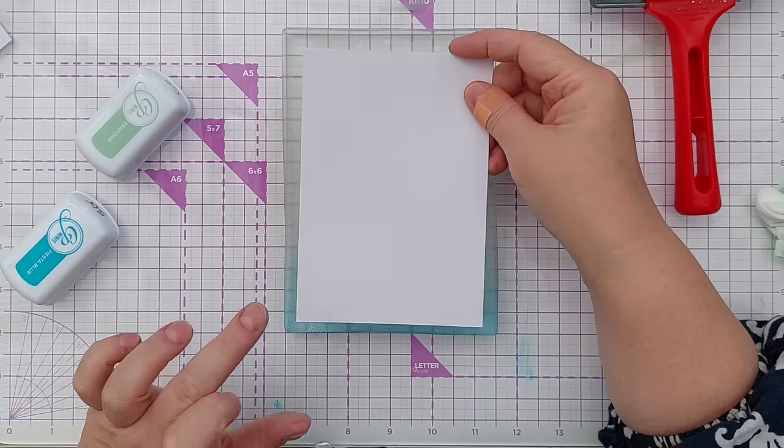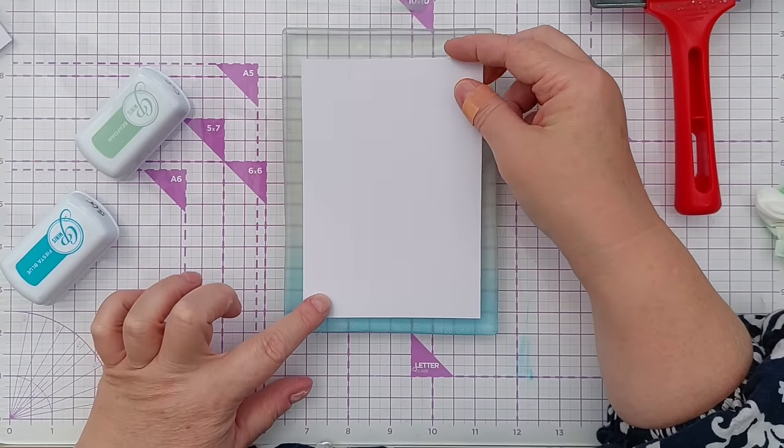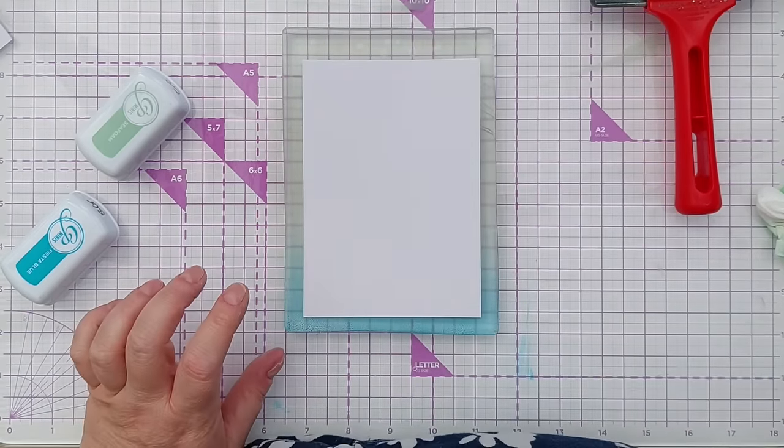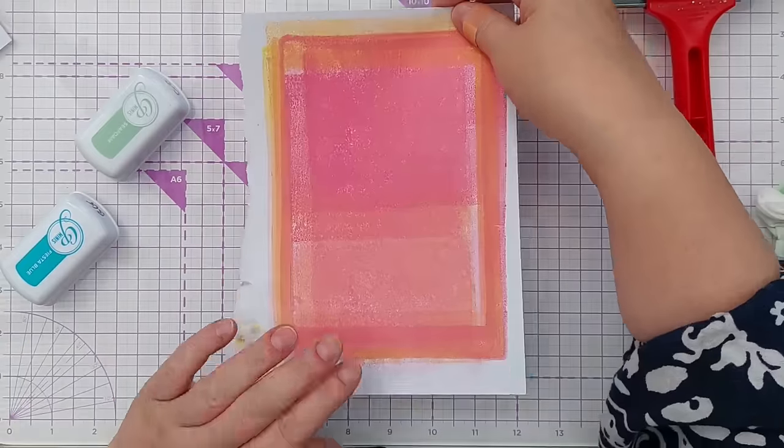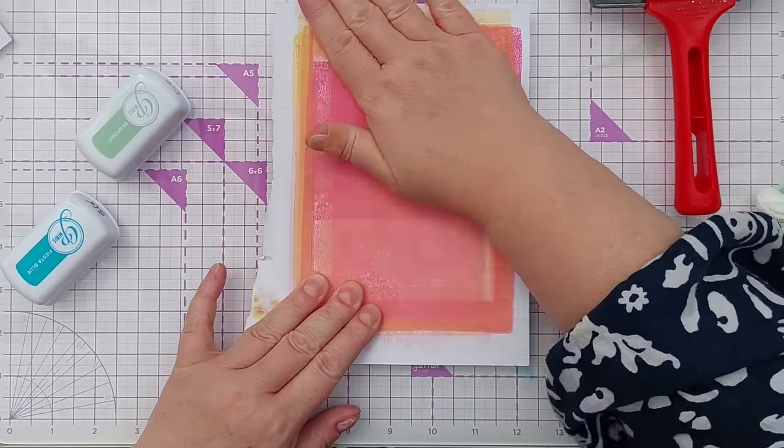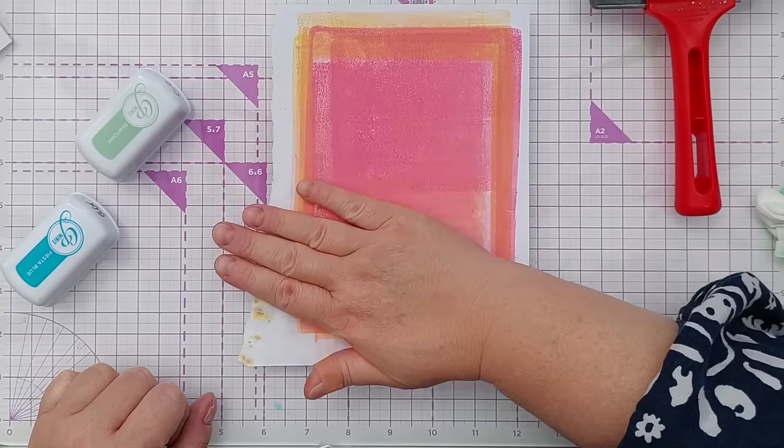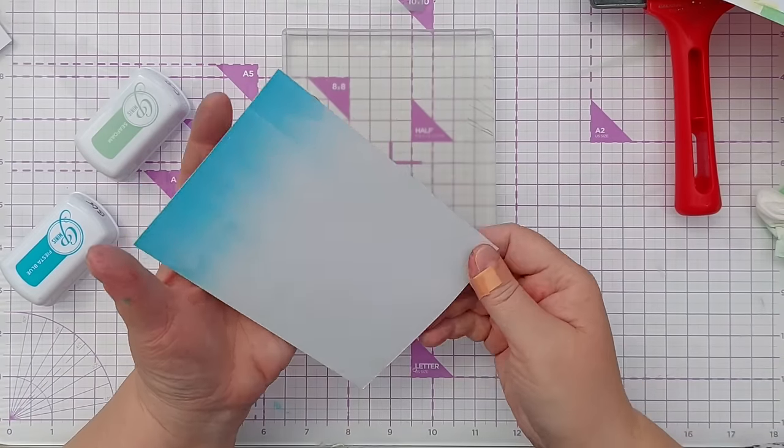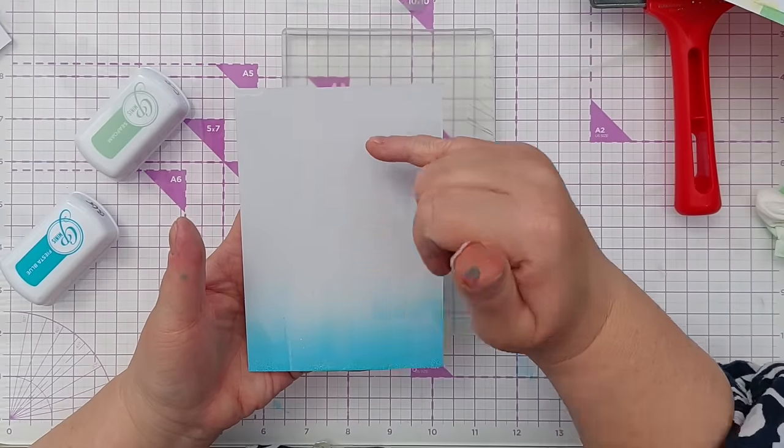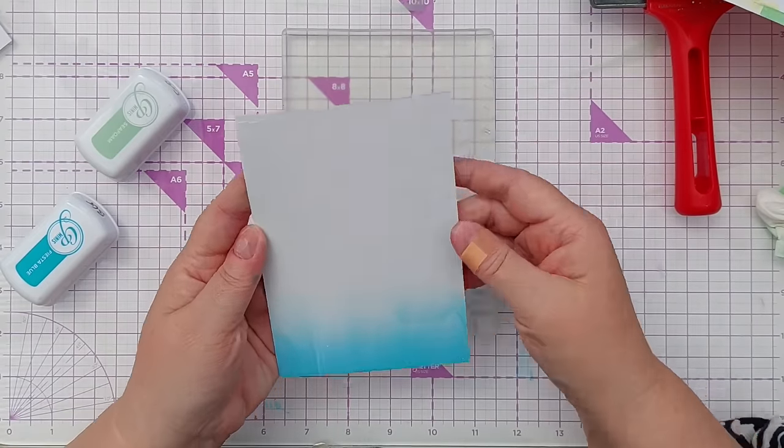And you might find that some of the colors actually stain your gel plate, but don't worry about that. The staining won't come off on future projects or affect the performance of your gel plate in any way.